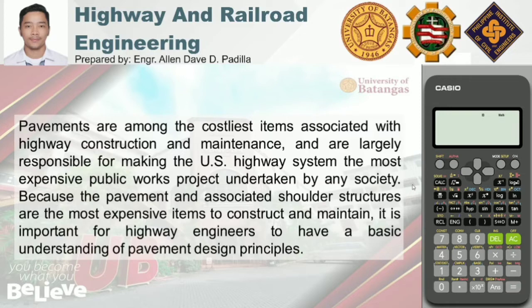Why? Because the highway system is not located in just one place or one province or one state — it accommodates the entire country. For example, in the Philippines, according to road data provided by the government as of October 15, 2019, we have a total of 33,018.25 kilometers of roads. Imagine how long that is. 97.18% of that are already paved — either asphalt or concrete pavement — and the remaining 2.82% are still unpaved, either gravel or earth road.